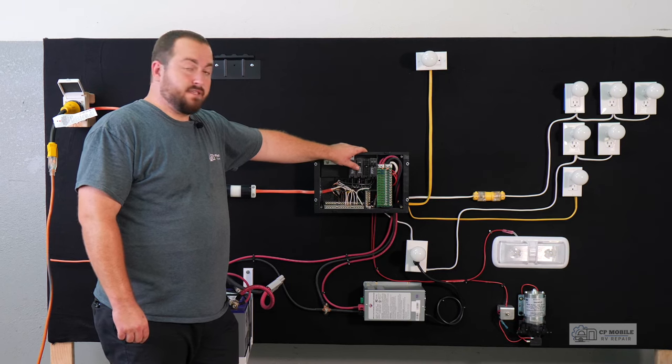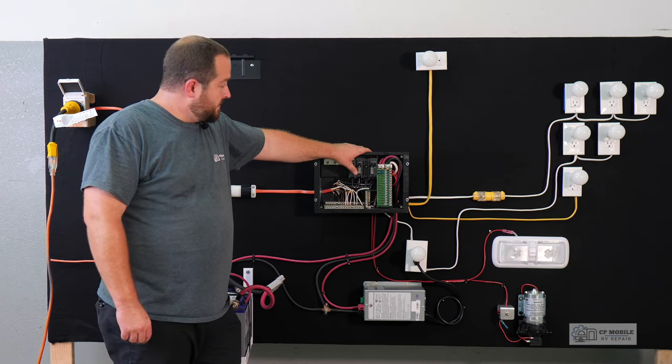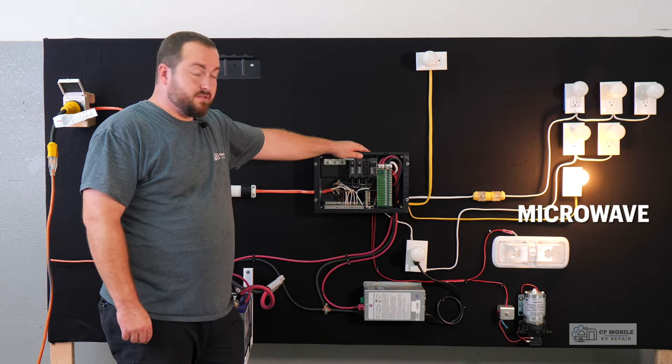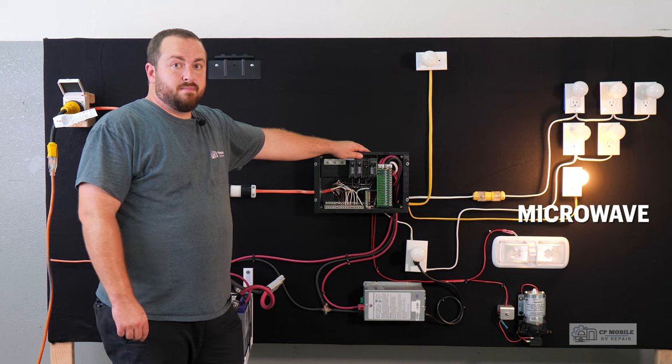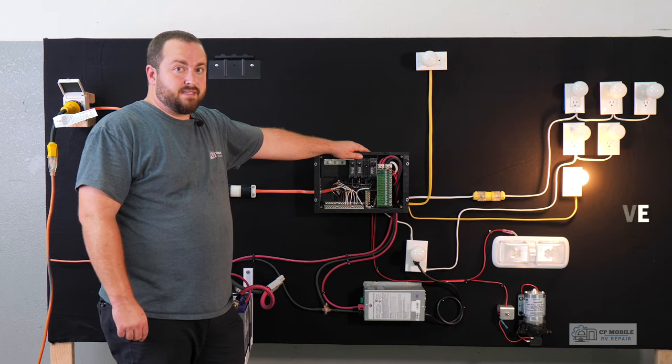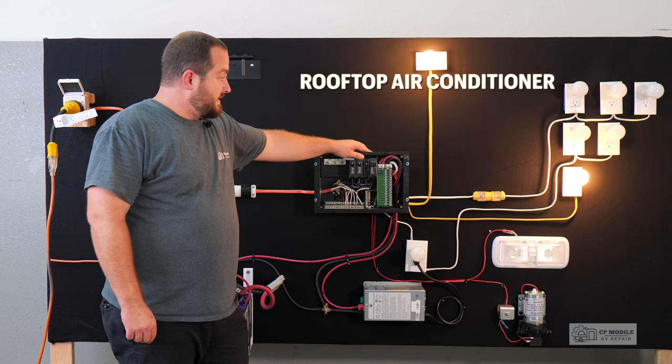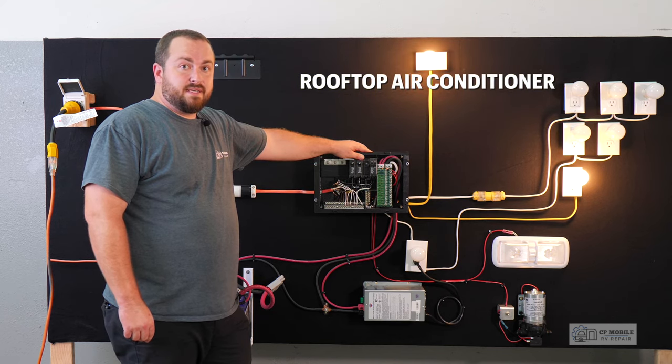Here we have the most common circuits that you will find in an RV. Our first one here represents our microwave which is generally on a dedicated breaker meaning only the microwave is connected to that breaker and nothing else. The next one for our AC unit which is also typically a dedicated breaker.